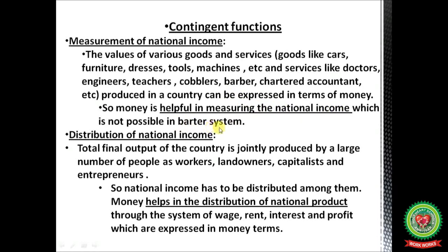Distribution of national income: whenever final output — goods and services — is jointly produced by workers, landowners, capitalists, and entrepreneurs, the profit must be distributed among all members of the economy. Money helps in the distribution of national product through a system of wages, rent, interest, and profit — and even taxes — all expressed in terms of money.